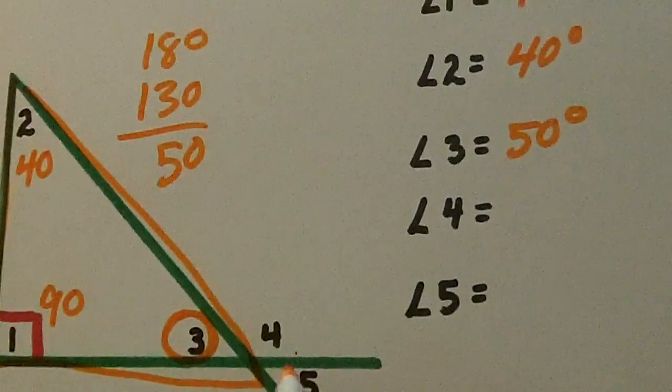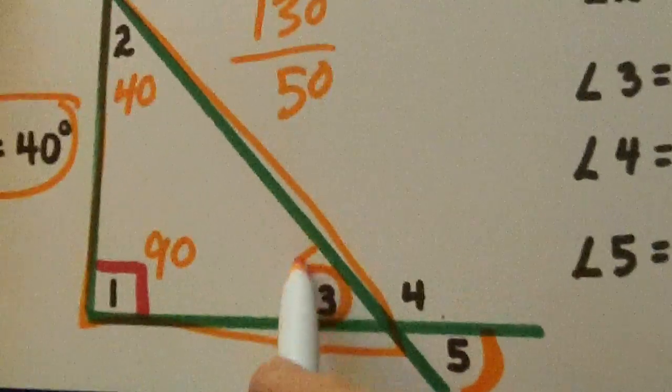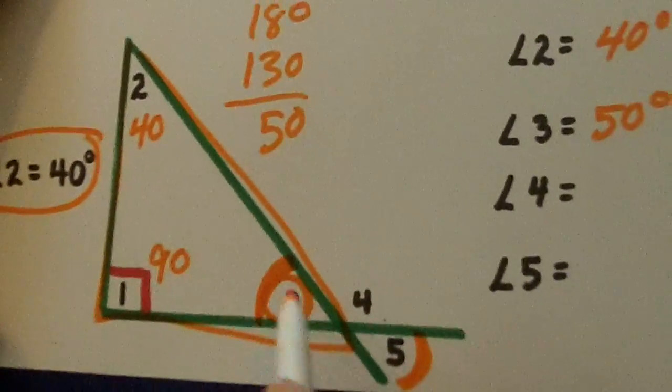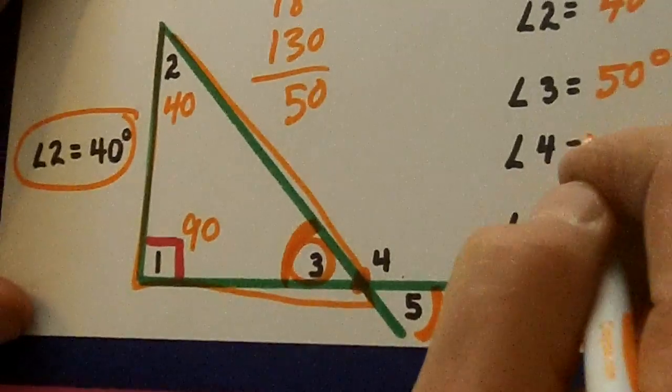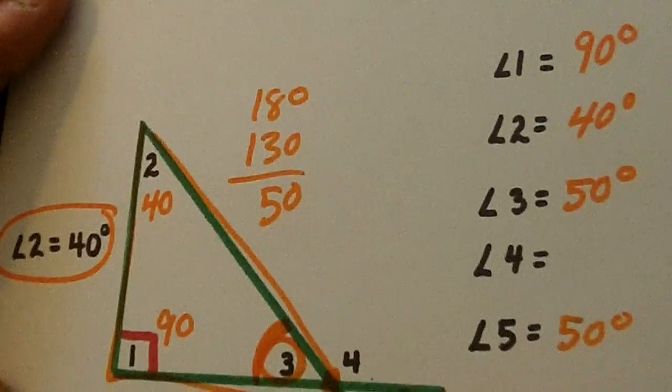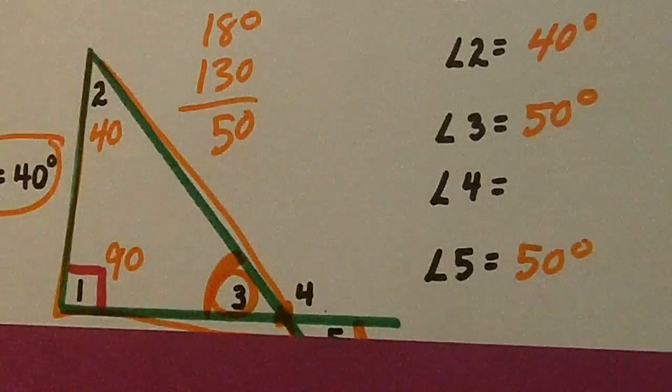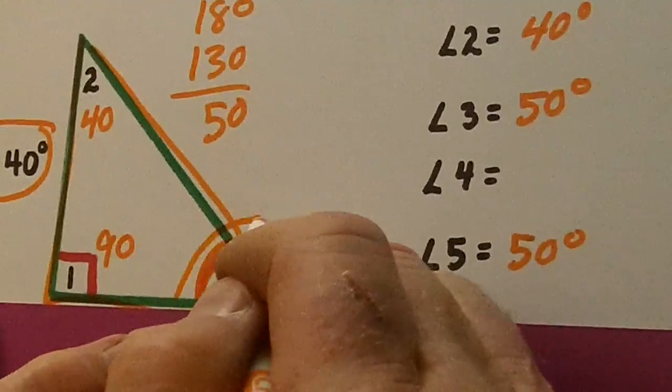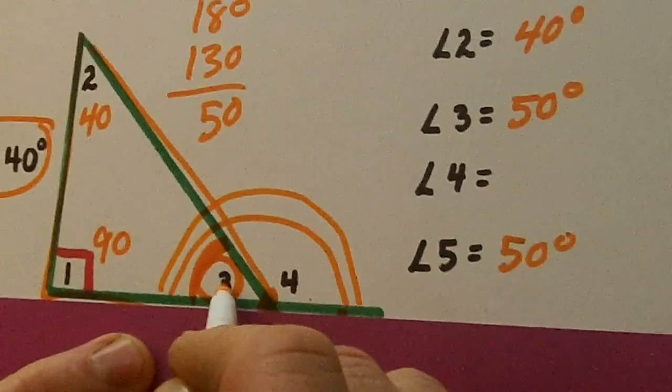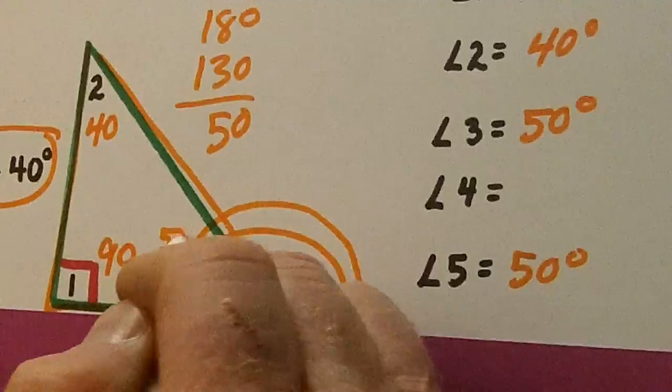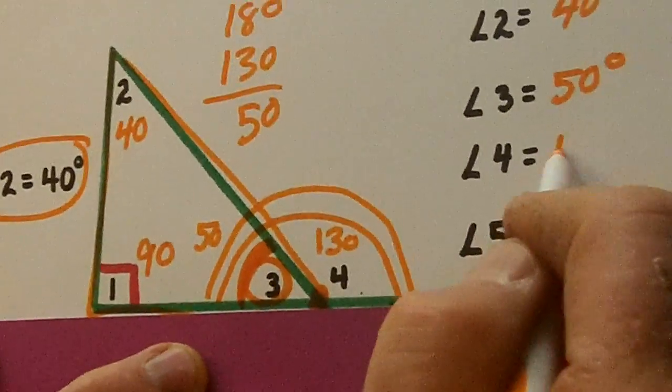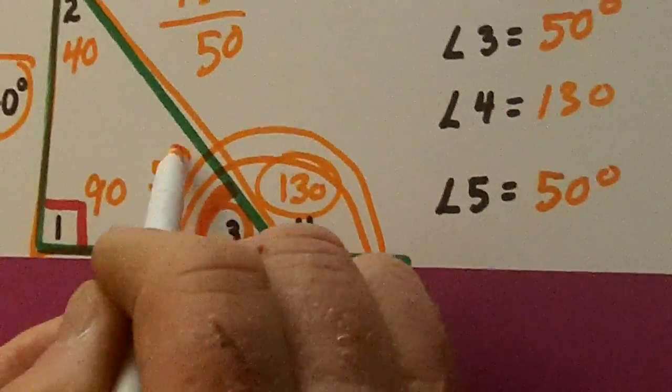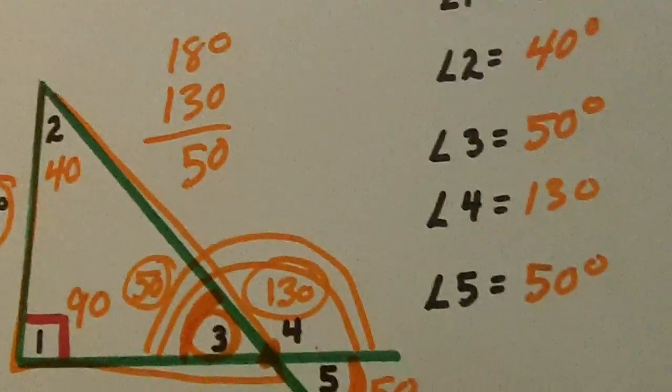But look here. Five is a vertical angle to three, because there's the vertex. So five is the same as three, 50 degrees. But what about four? Four is a supplement to three. Three is 50, so four is 130, because 130 and 50 are 180.